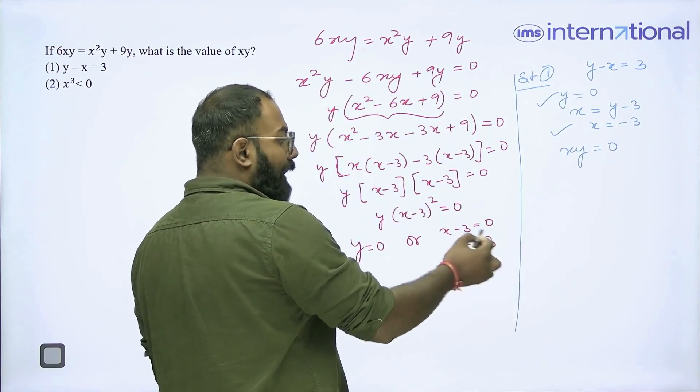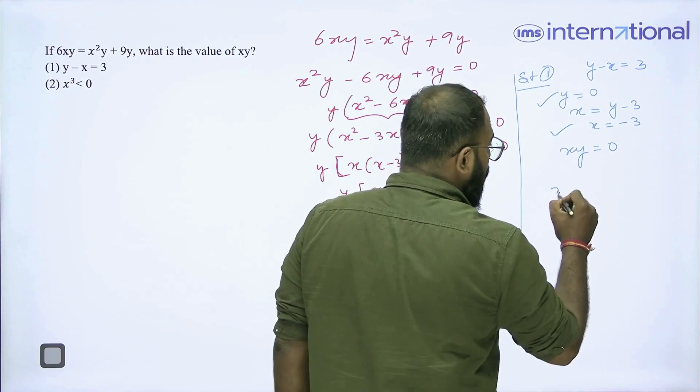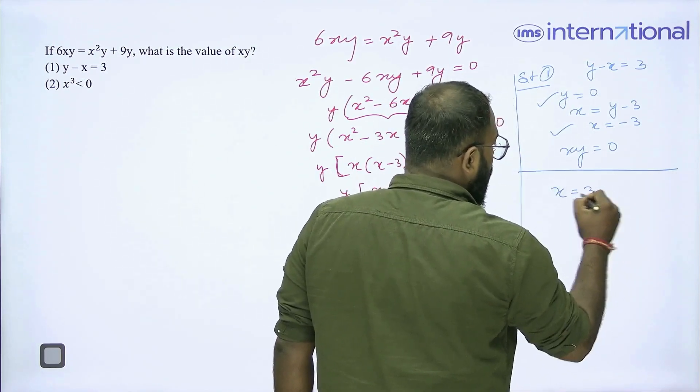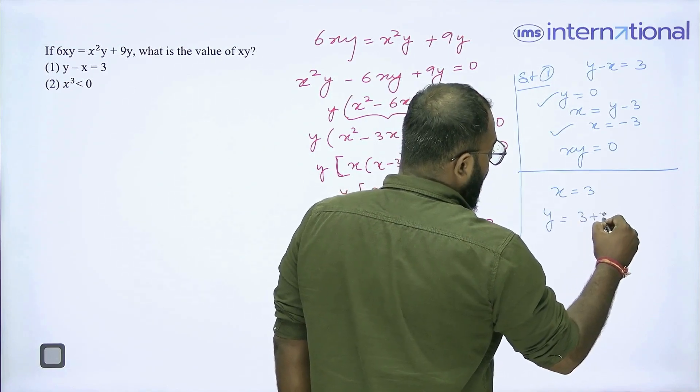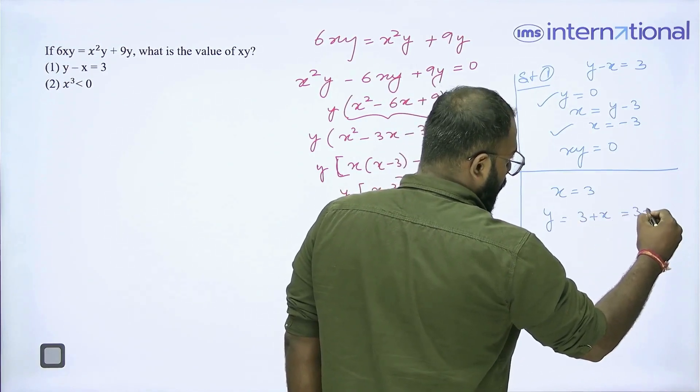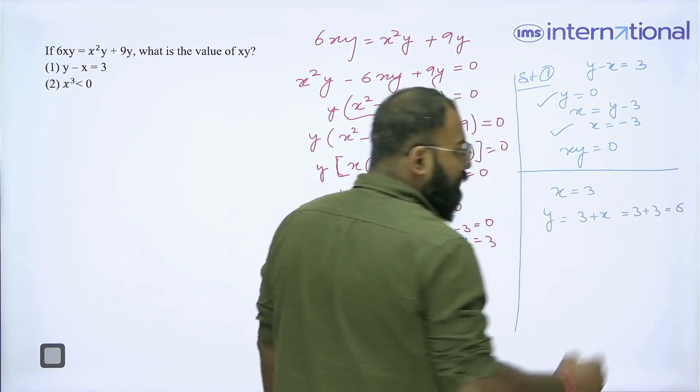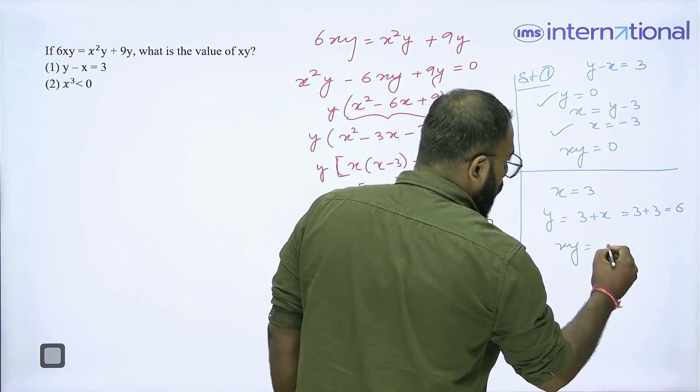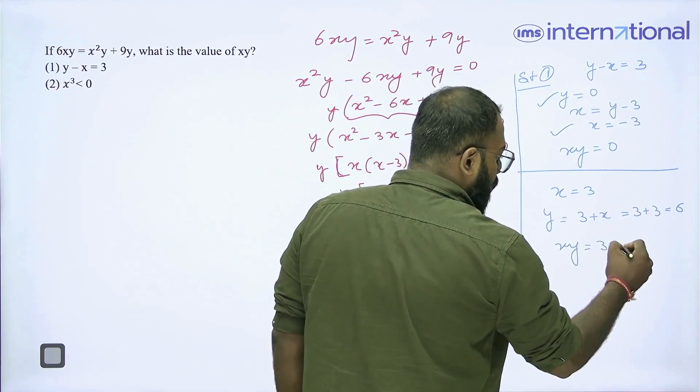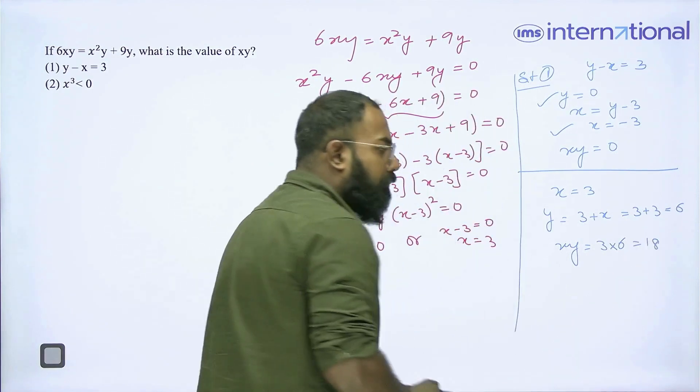Now, if I take x = 3, if x = 3, what is y? y = 3 + x, that means 3 + 3, that is 6. Now, what is xy? xy = 3 × 6, that is 18, clear?